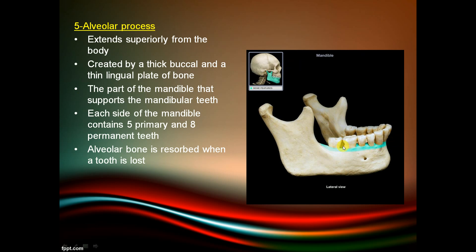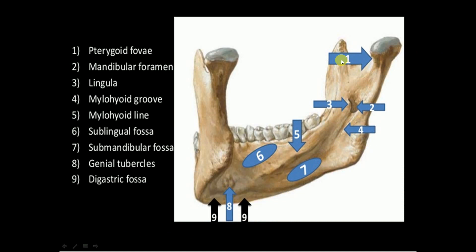The alveolar processes of the mandible extend superiorly, created by thick buccal and lingual plates of bone, supporting all the mandibular teeth — five primary and eight permanent. The mandible contains the pterygoid fovea, mandibular foramen, lingula, mylohyoid groove, mylohyoid line, sublingual fossa, submandibular fossa, genial tubercles, and digastric fossa.